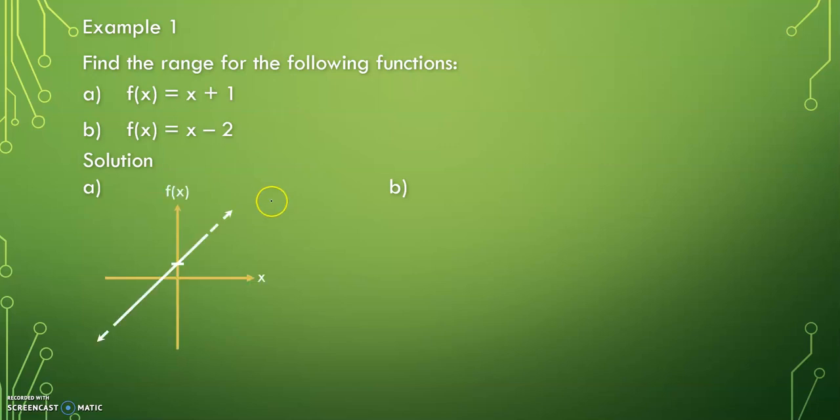So let's look at a. This is the graph and the function is f(x) = x + 1. You can notice that this function keeps going on both directions.